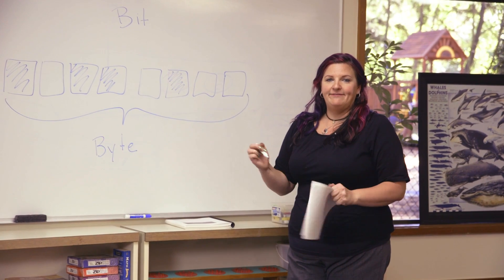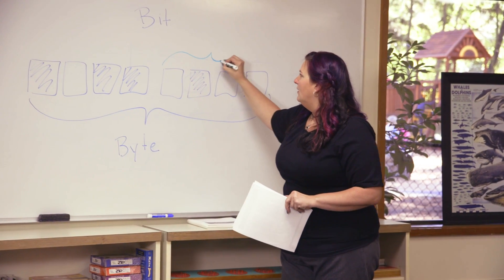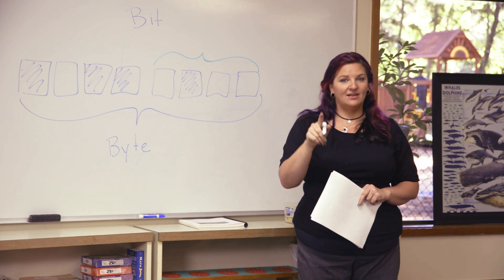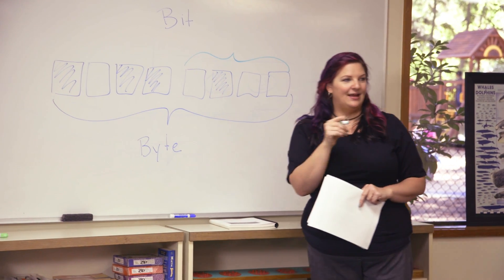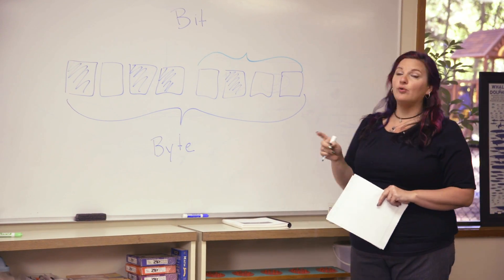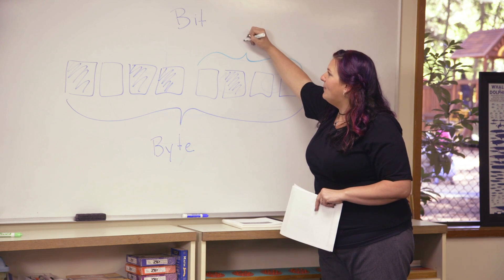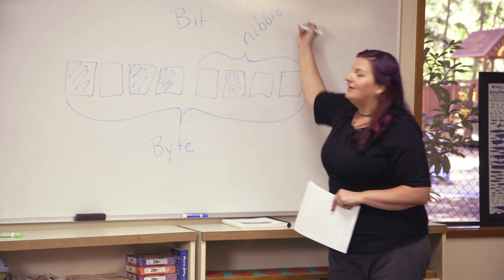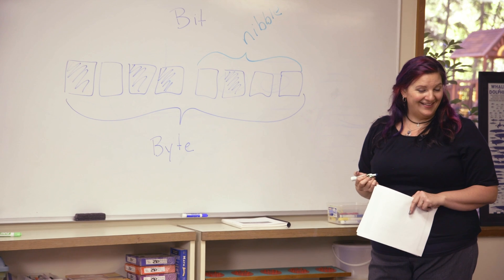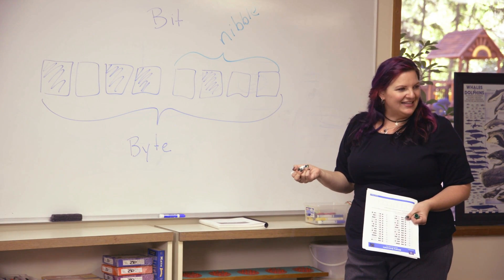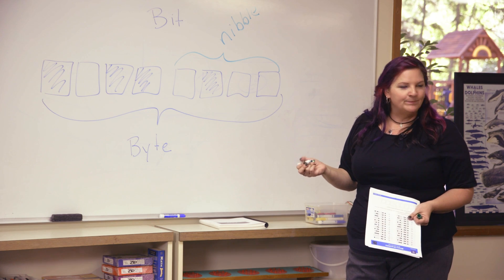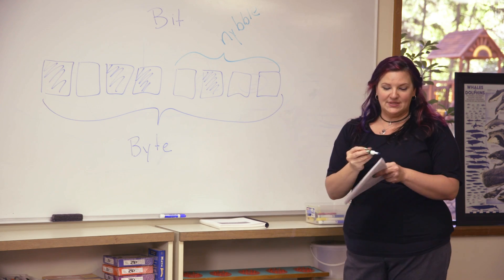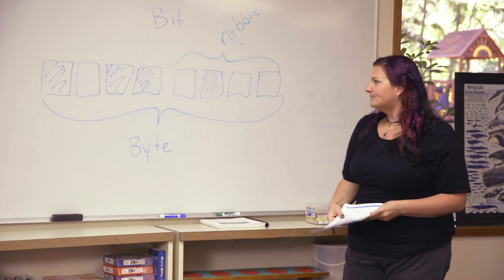There's a secret, kind of funny name for half of a byte. What do you think half of a byte is called? A millibyte? No, there is such a thing as a millibyte, but half a byte is called... a nibble. A nibble! Isn't that what you call it when you take half a byte? Some people spell it like this so that it's the same as byte. But that's what it's called — I'm not even kidding you.